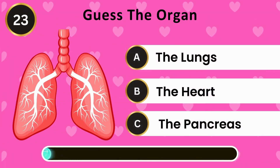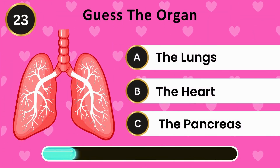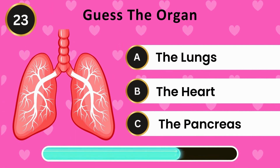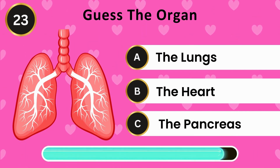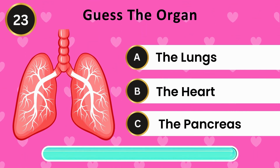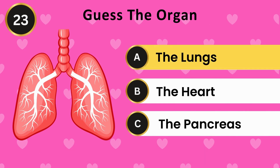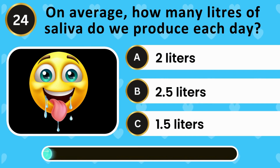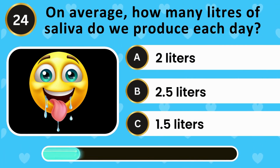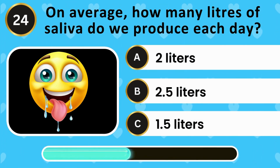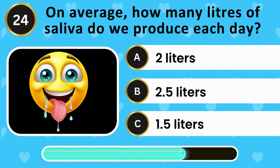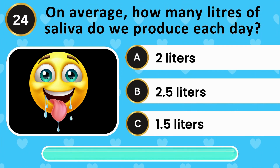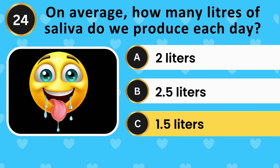Guess the organ: the lungs, the heart, the pancreas. The answer is the lungs. On average, how many liters of saliva do we produce each day? 2 liters, 2.5 liters, 1.5 liters. The answer is 1.5 liters.